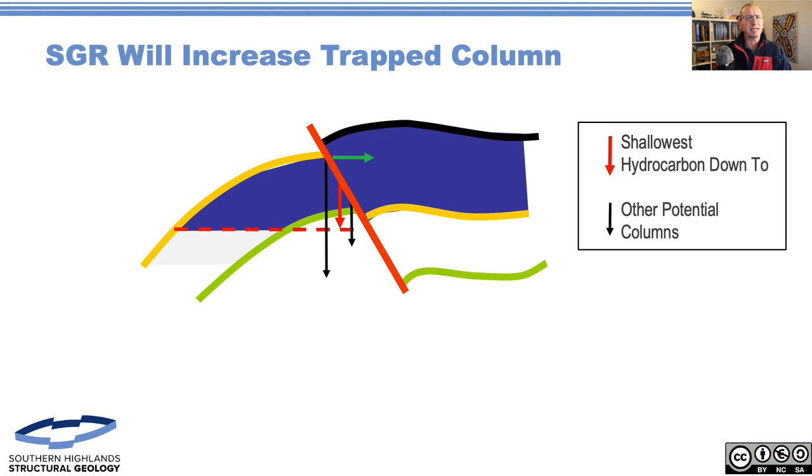I guess the thing I'm trying to get people to understand is that in reality that green arrow is the one we should be worried about - where's the highest reservoir-reservoir juxtaposition. That's the caveat on it. We'll go through case studies using public domain data over the next wee while to explore that and look at those.